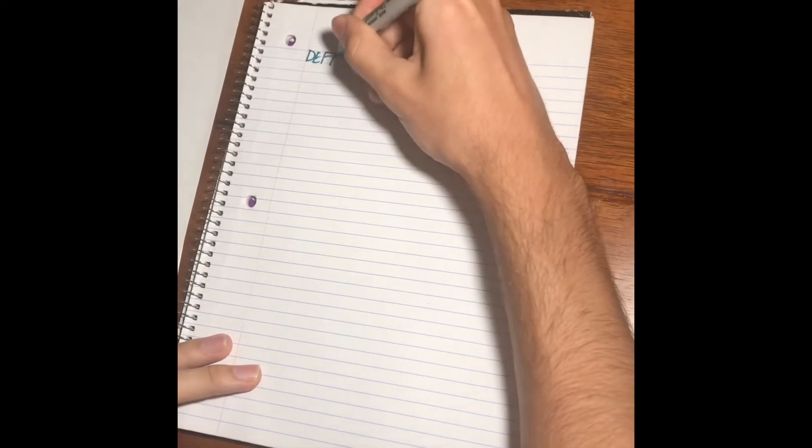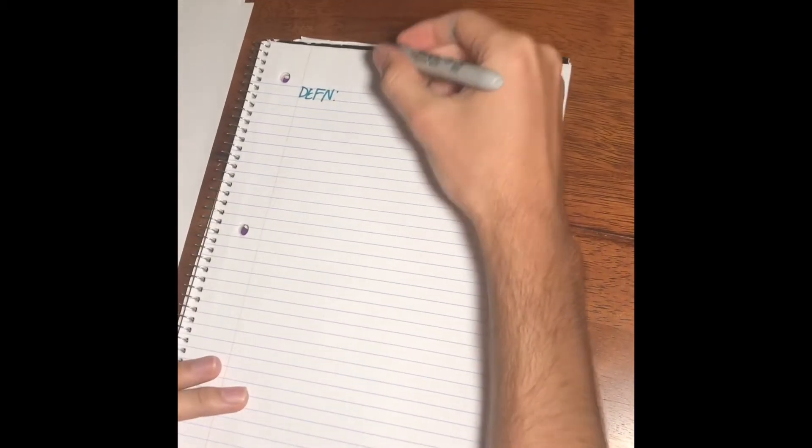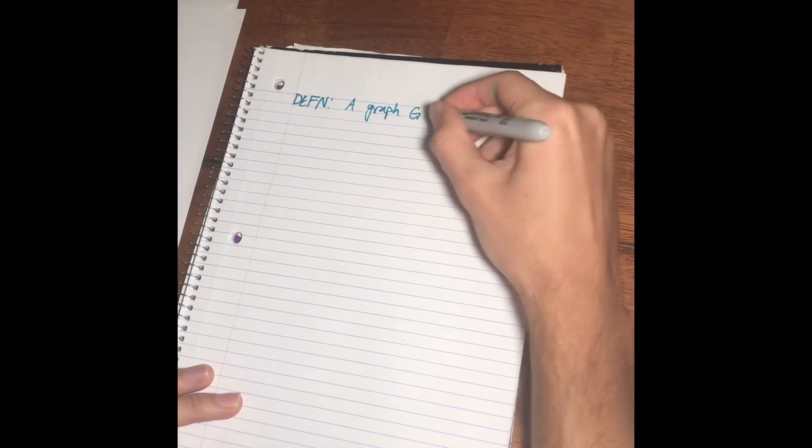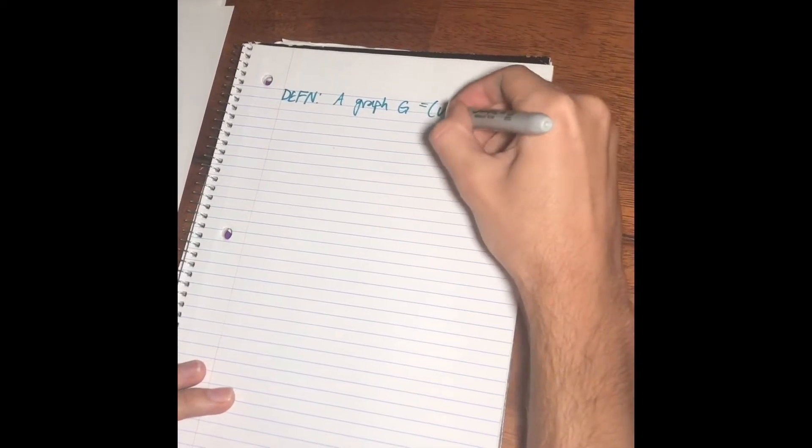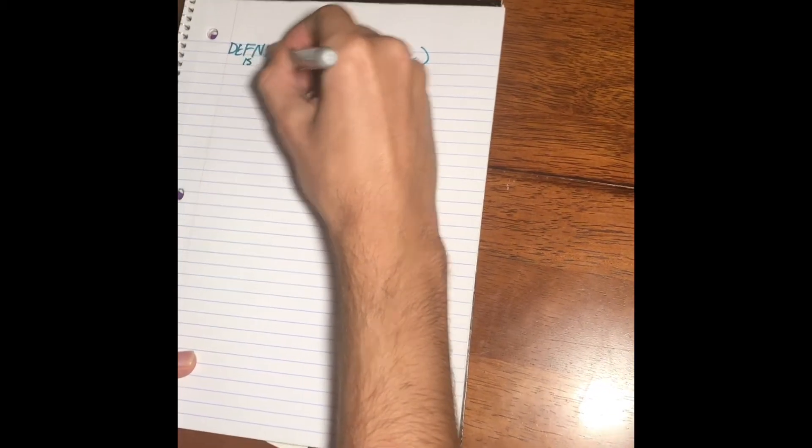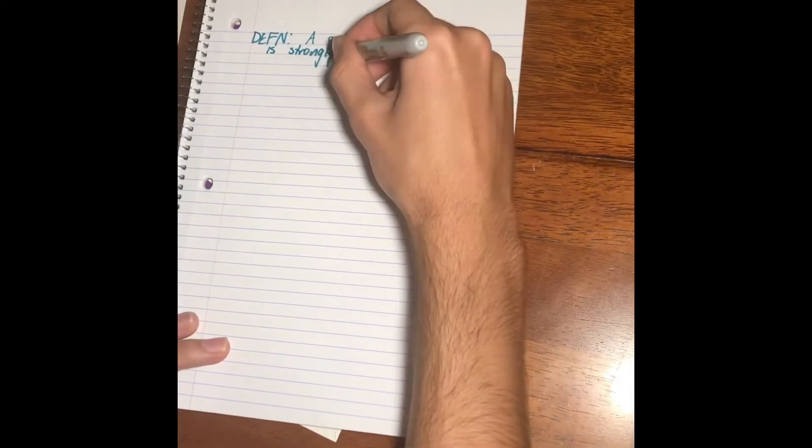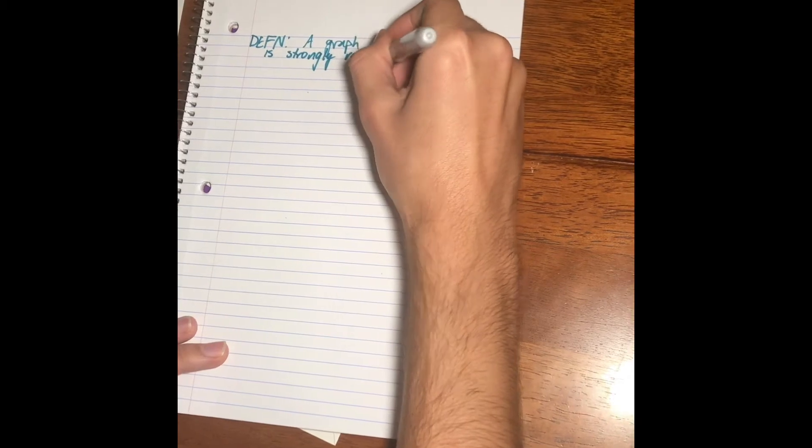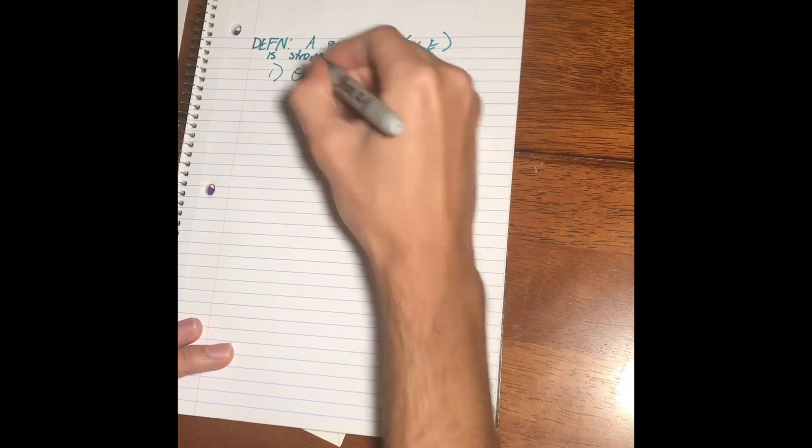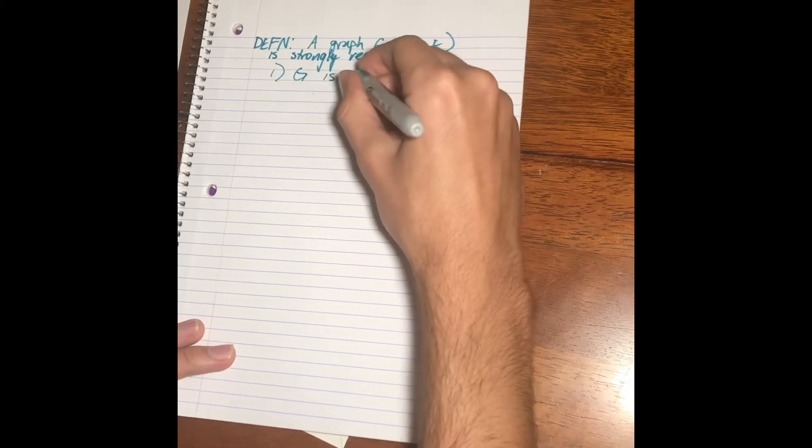So, let's start off with a definition here. What is a strongly regular graph? Well, a graph G is strongly regular if number one, G is K regular.